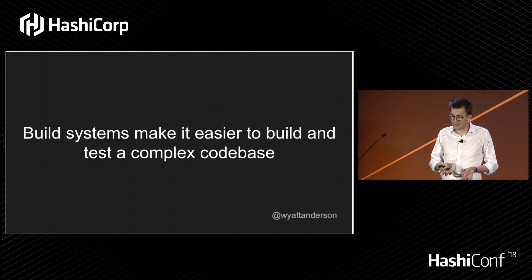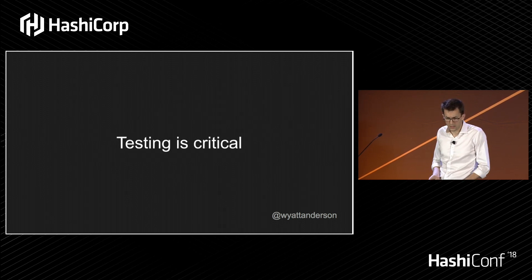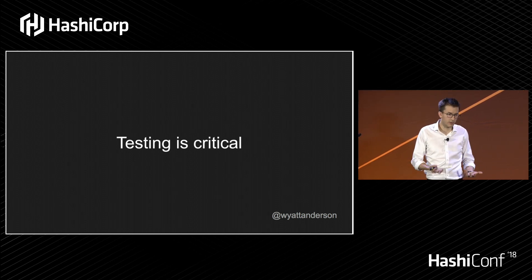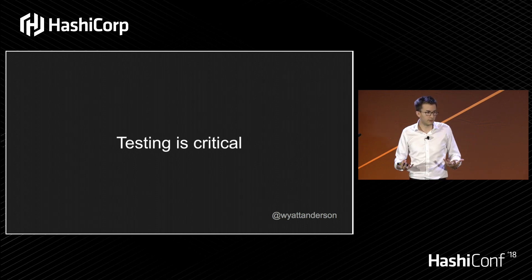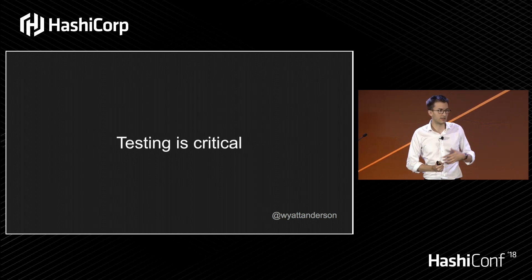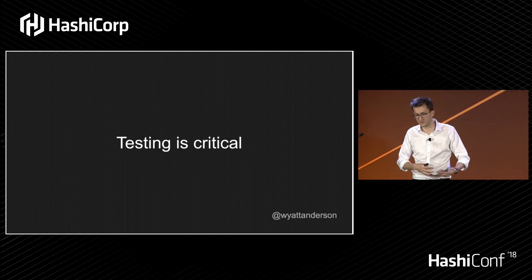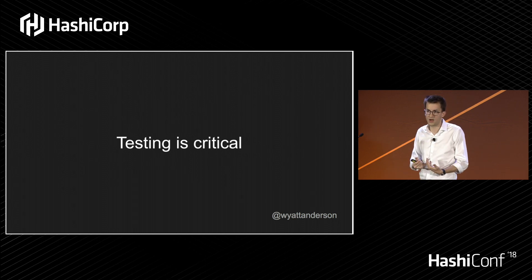Build systems make it easier to build and test a complex code base, especially in a monorepo. Testing is critical and really important for our team. Testing lets us move quickly — it gives us the confidence we need to deploy hundreds of times a day, to release at any time. Our engineers can drive their own release process: ship code whenever they want, deploy fixes, deploy new features, interact with other teams. It's really given us the ability to move very quickly as an organization, but not break things.